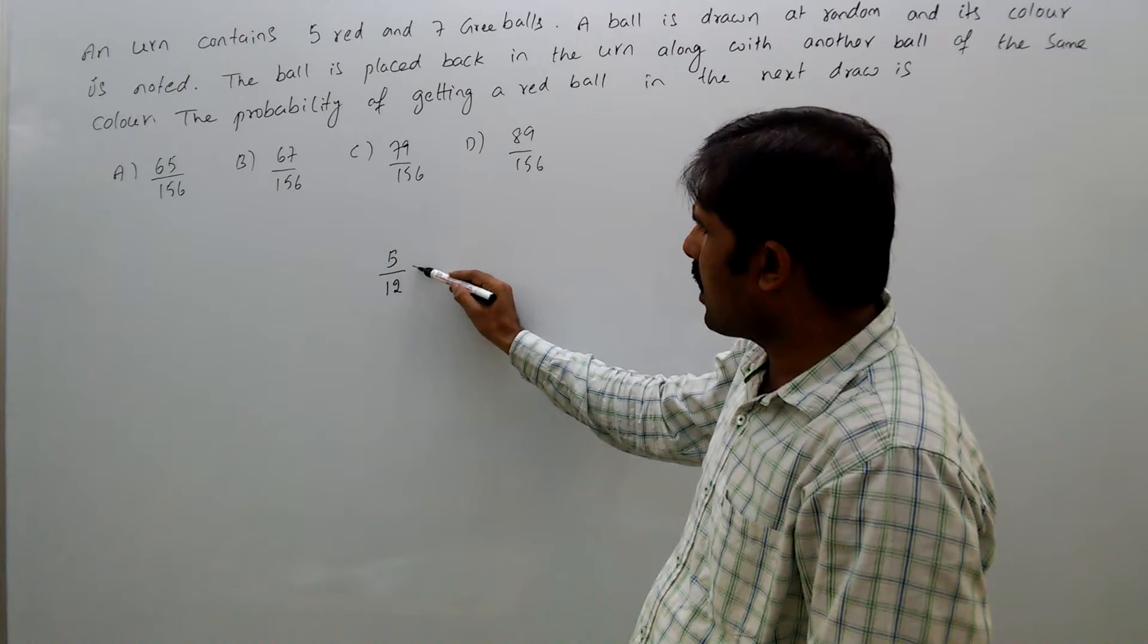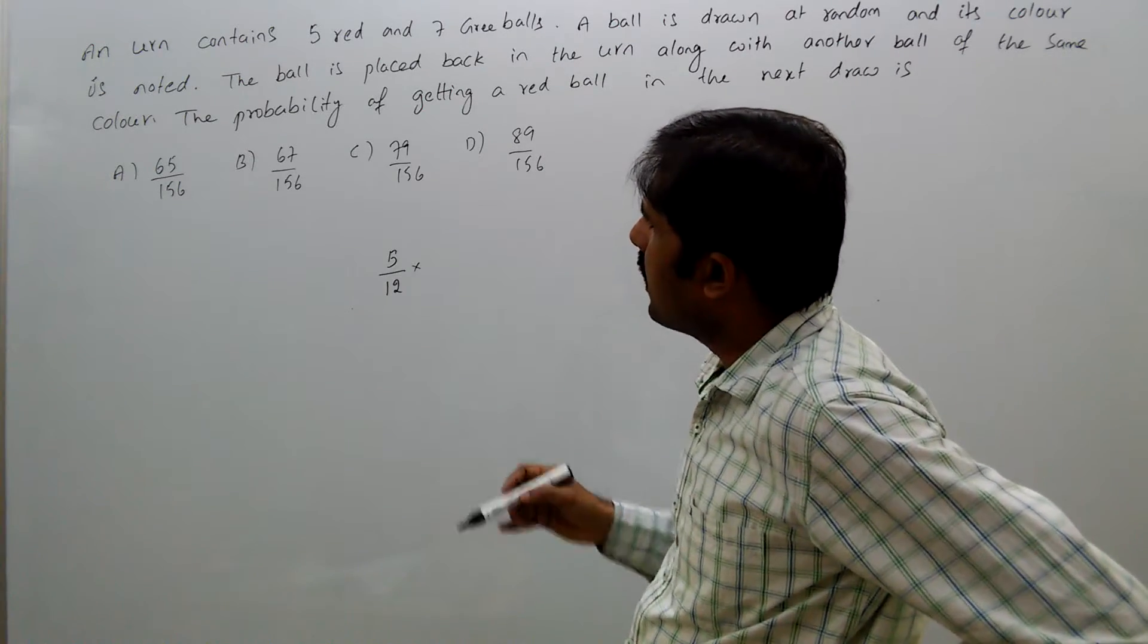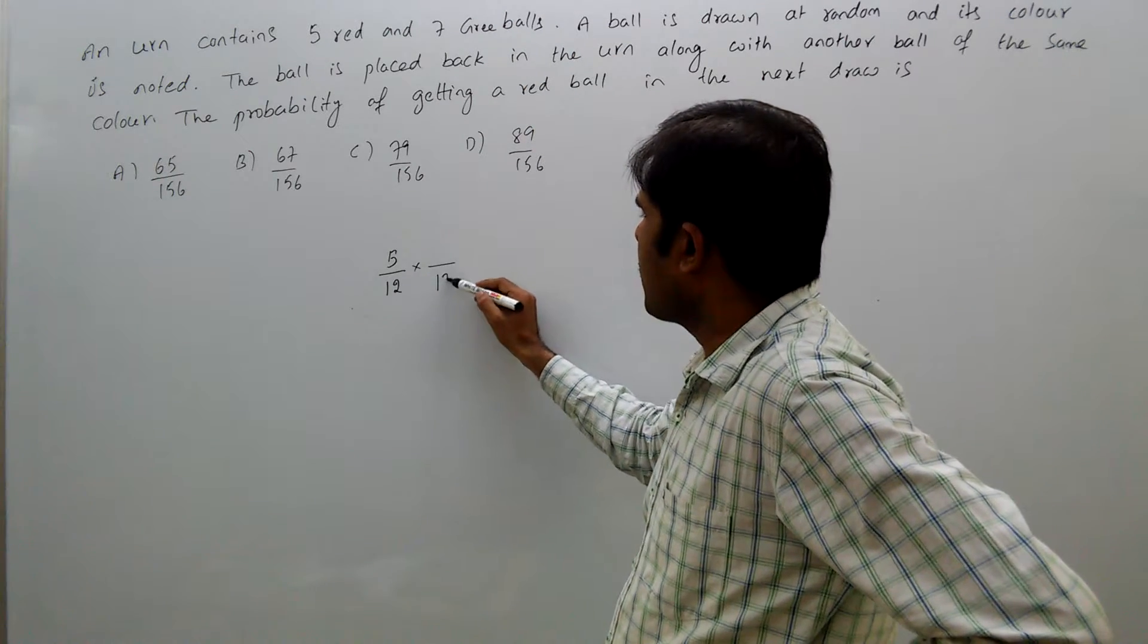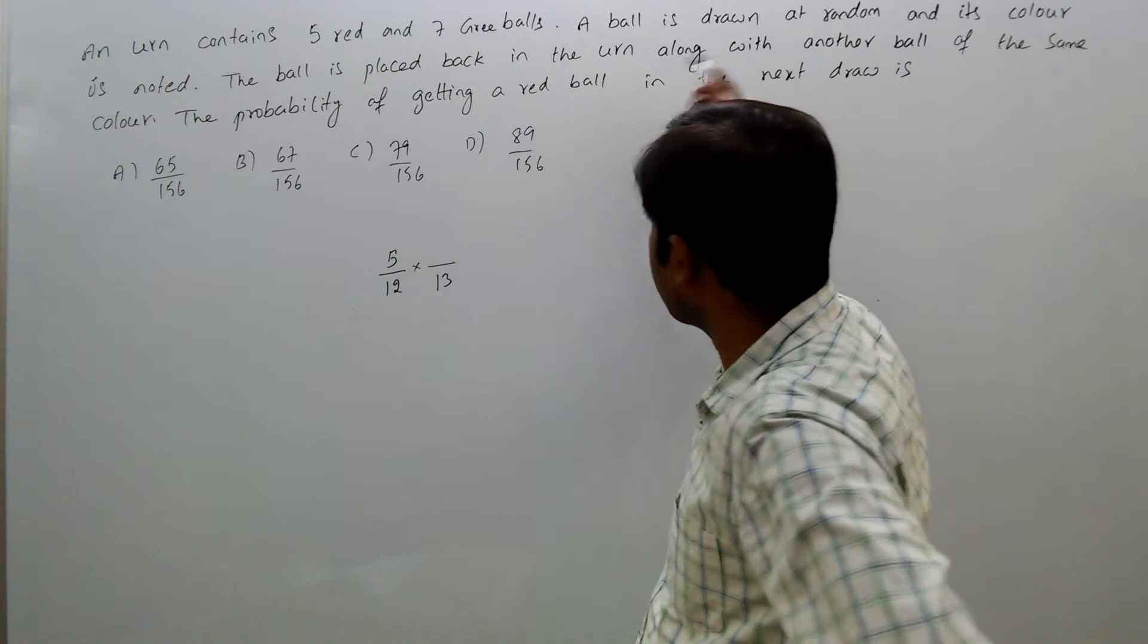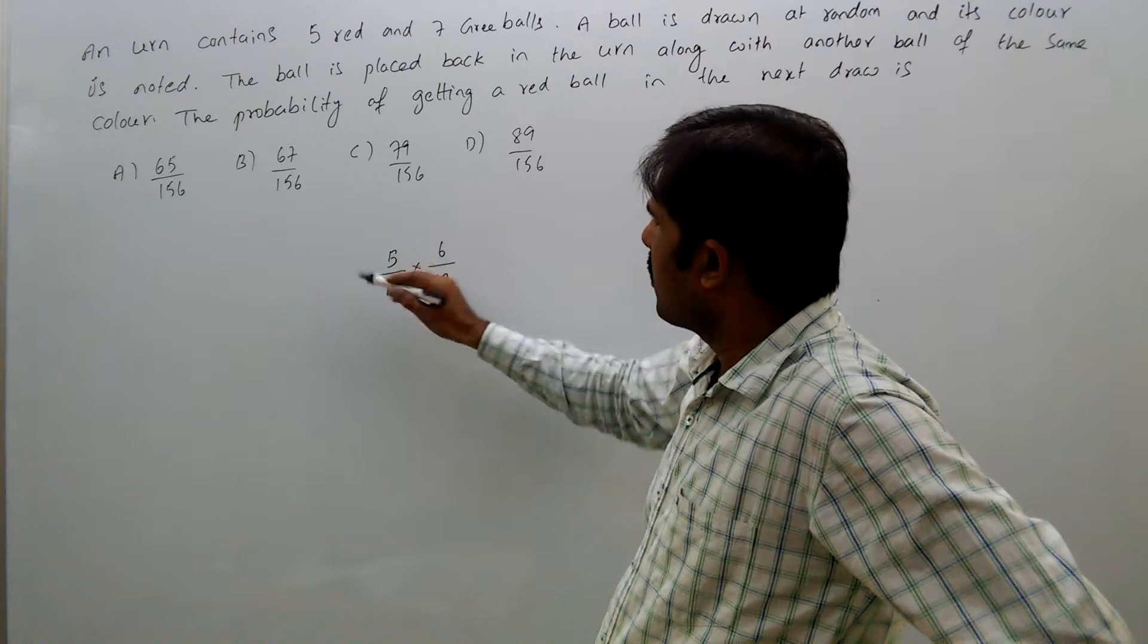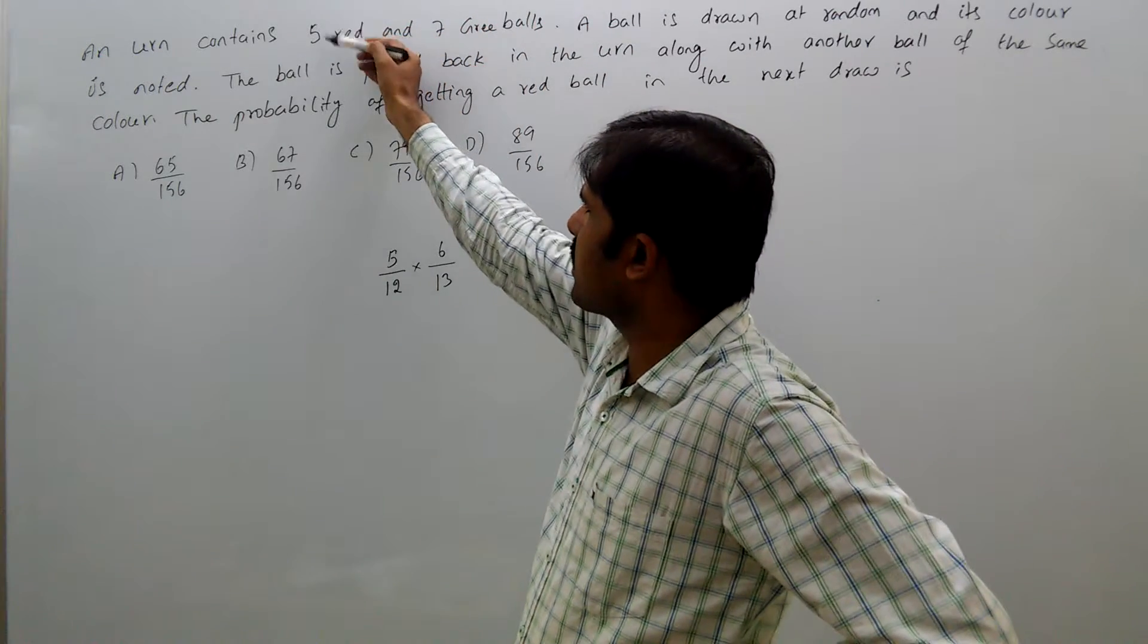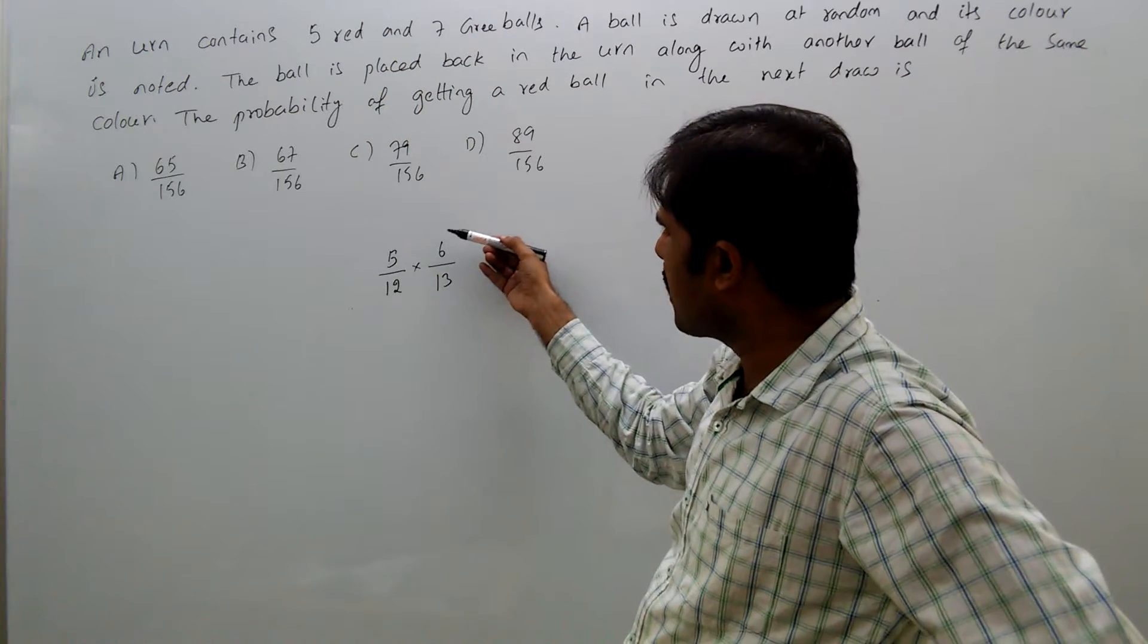If the ball drawn is red, then the added ball will also be red. Then in the urn there will be 6 red balls and 7 green balls, total 13 balls. The second time getting a red ball is 6 by 13, because the drawn ball and added ball are both red.